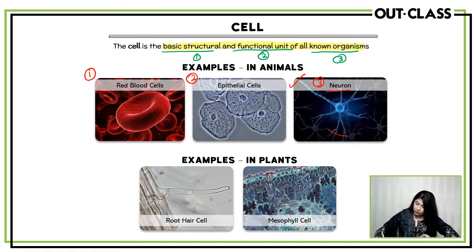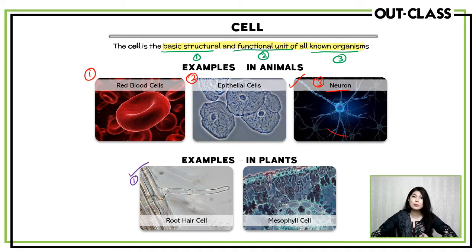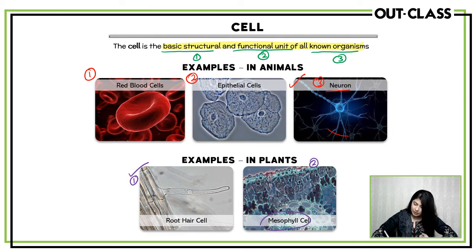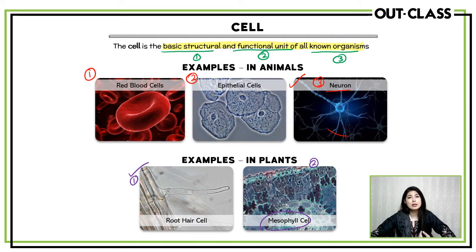In plants, we have root hair cells, which are found in the roots and absorb water and mineral salts. The second example is mesophyll cells — mesophyll cells are found in leaves. We will read about their structure in a lot more detail later.